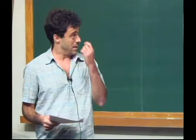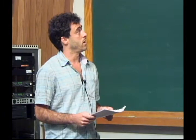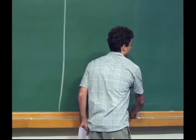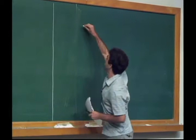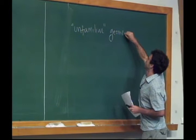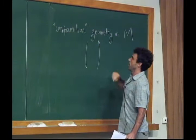Rather than talking about theorems, the main goal is really to tell you about a viewpoint — a different point of view to study geometrical structures related to Poisson geometry and symplectic geometry. If I were to summarize the talk with one picture, it would be explaining the following principle: you can study unfamiliar geometry on a manifold M, which is a familiar type of space.